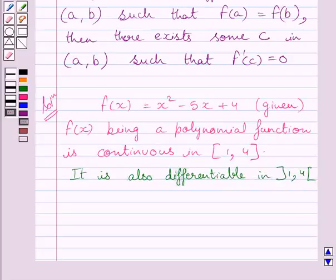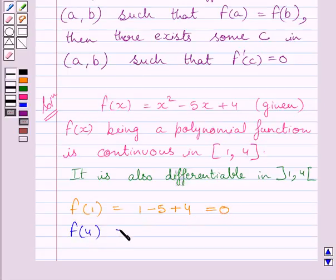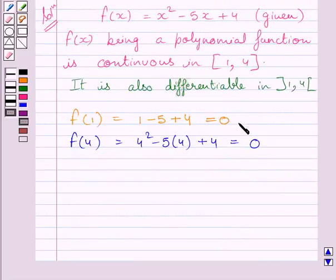Now, using key idea, we will find values of f(1) and f(4) and we will check if f(1) is equal to f(4). So, first of all, we will find f(1), it is equal to 1 - 5 + 4. Substituting 1 for x in this expression, we get 1 - 5 + 4, which is further equal to 0. Similarly, we can find f(4). Substituting 4 for x in this expression, we get 4² - 5(4) + 4. It is equal to 0 only. Now, clearly we can see f(1) = f(4). So, we can write f(1) = f(4).